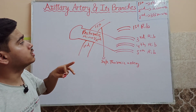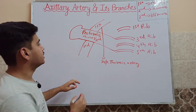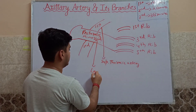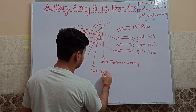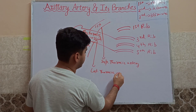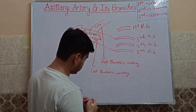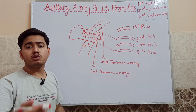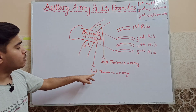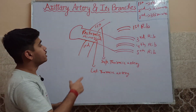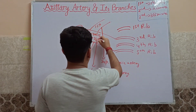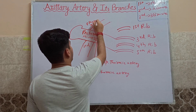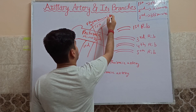Now moving to the second part, which gives us two branches. The first branch of the second part is the lateral thoracic artery. It also supplies blood to the mammary glands, but majorly the mammary glands are supplied by the internal thoracic artery, which we will study in the subclavian part. To a limited extent, the lateral thoracic artery also supplies the mammary glands. The second branch of the second part is the thoracoacromial trunk.